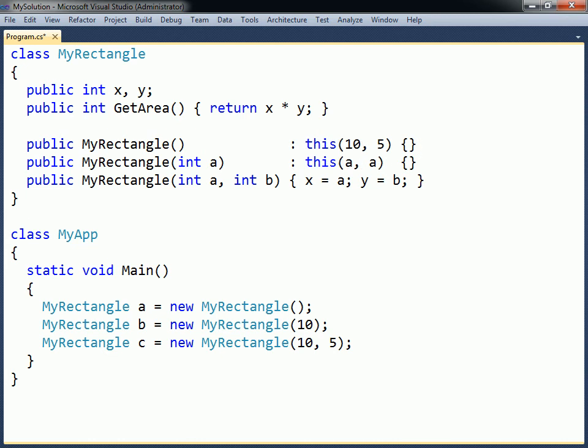The this keyword can be used to call one constructor from another. This is known as constructor chaining, and allows for greater code reuse. Note that the keyword appears as a method call before the constructor body and after a colon.